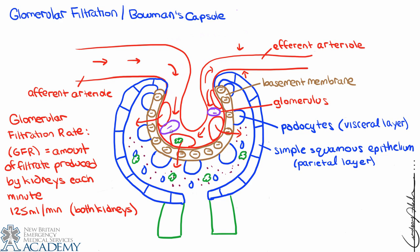There is one final layer of protection called filtration slits, for which the podocytes are responsible. The filtration slits offer a final layer of protection: if something we want to save in the blood squeezes through the glomerulus and is not repelled by the negative charge of the basement membrane, it still has to pass through the spaces between the podocytes to actually enter Bowman's capsule.